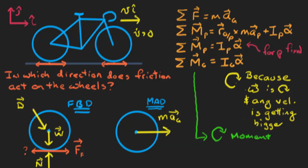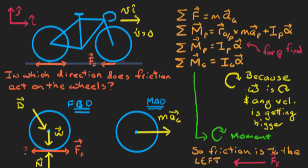We just argued the angular acceleration must be clockwise. Since the two sides of the equation must be equal, the net moment must also be clockwise. The only way to get a clockwise moment about the center of the wheel is if the friction force is directed to the left — backward. So there's the friction force pointing to the left. This backward-facing friction force delivers a clockwise moment — the moment we need to produce this angular acceleration. I'll add the I_G alpha term to the mass acceleration diagram. Question one — the front wheel — is solved.